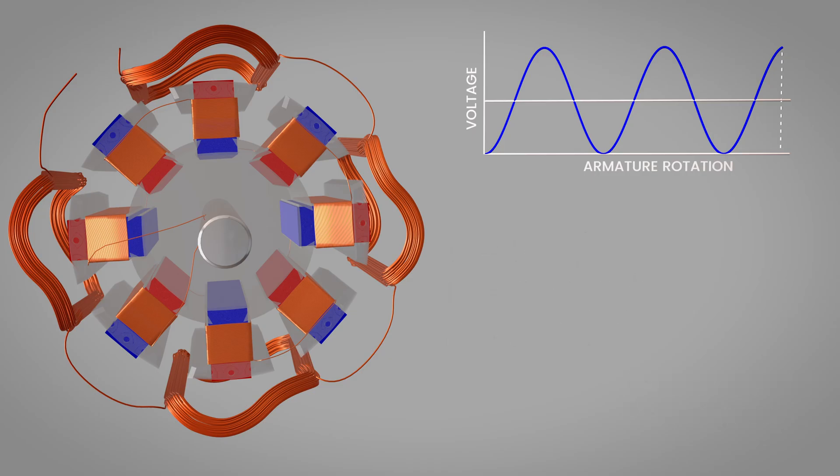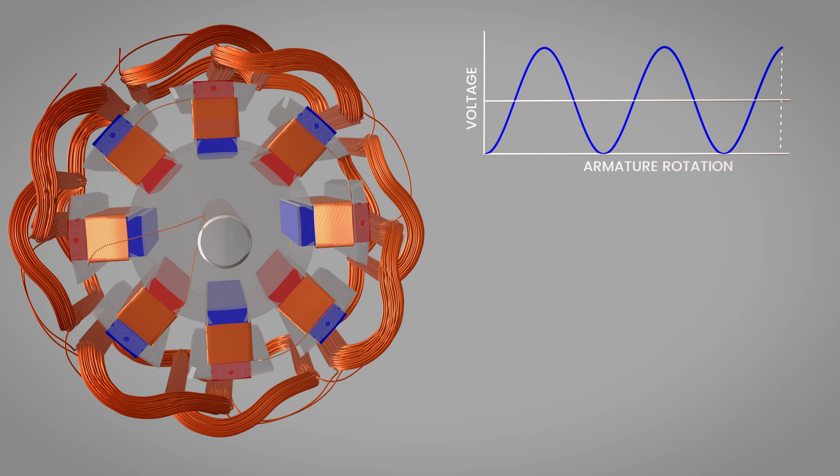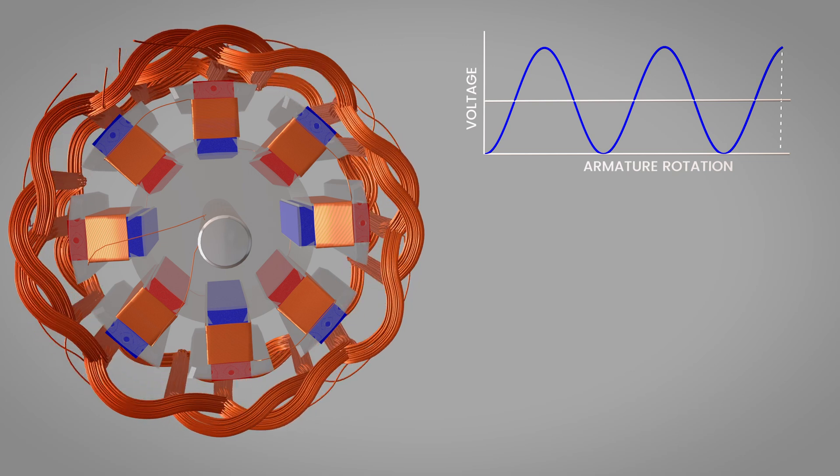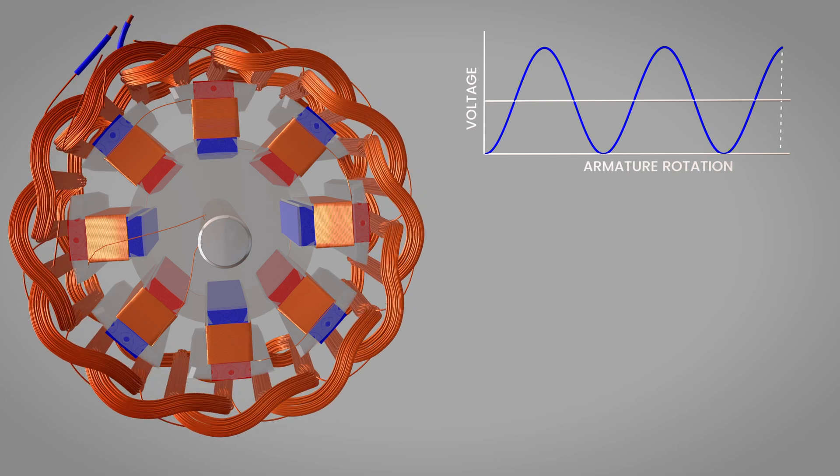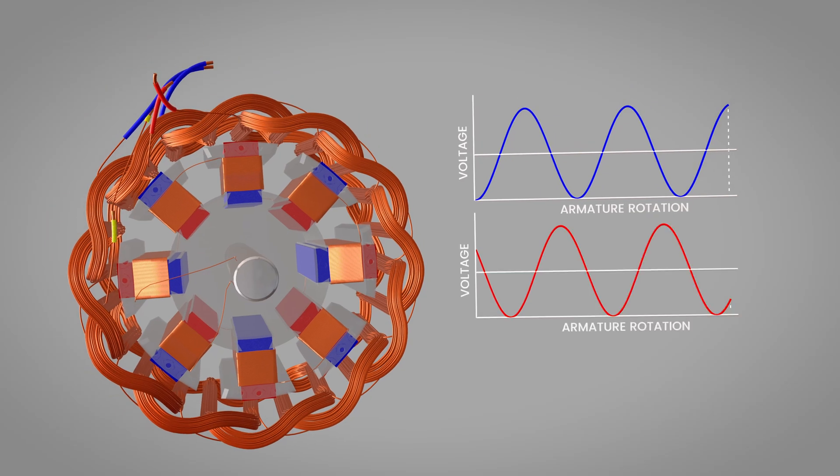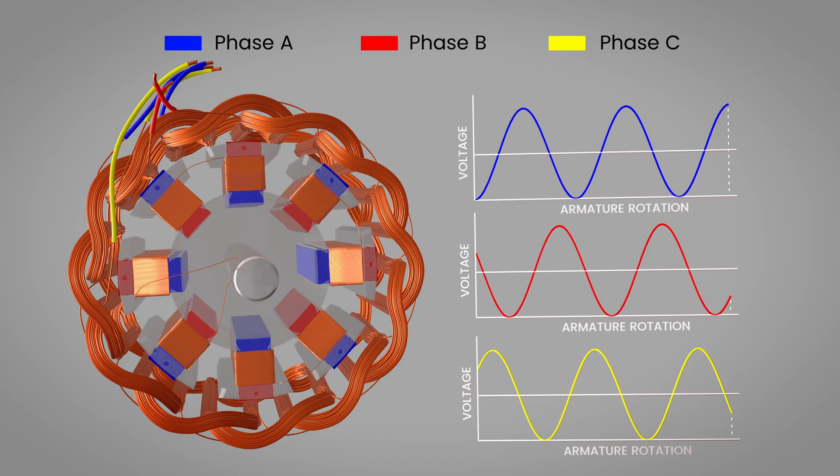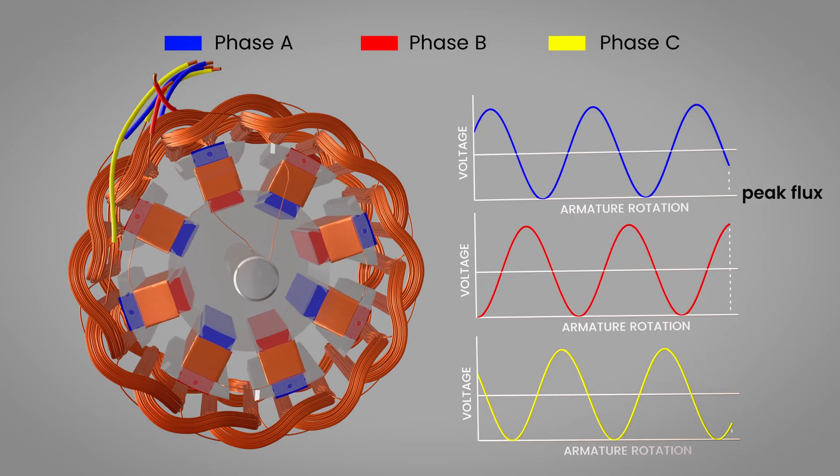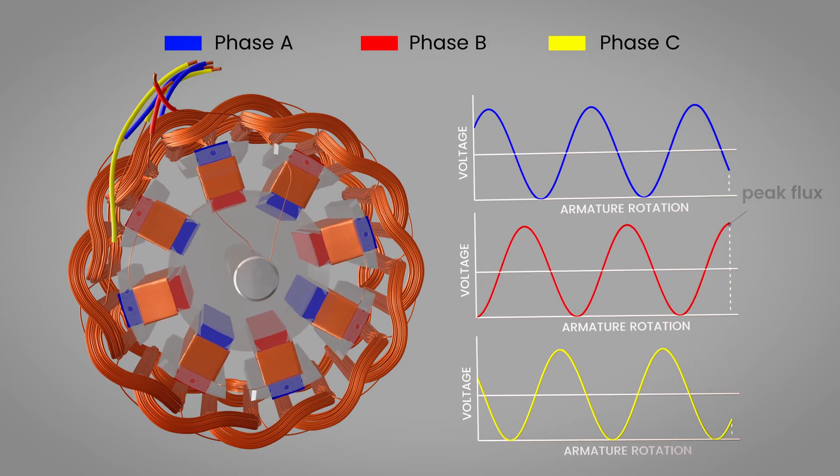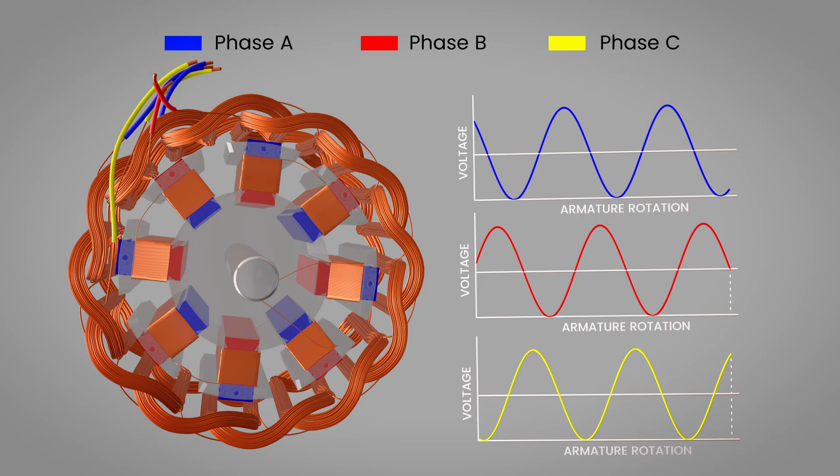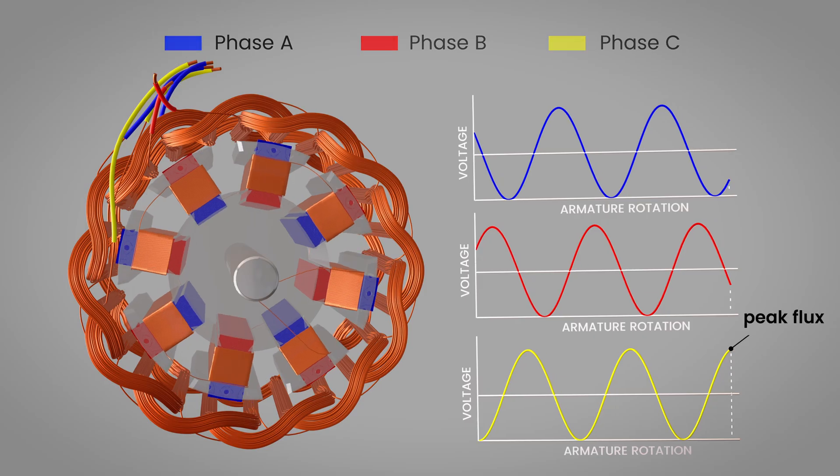To create the three-phase power, we need three identical stator coil groups positioned 120 degrees apart around the stator circumference. Each coil group, let's call them phase A, phase B, and phase C, has the same construction and the same number of turns. As our eight-pole rotor rotates, phase A experiences peak magnetic flux first. Exactly 120 degrees later phase B reaches its peak flux. Another 120 degrees later, phase C hits its maximum.